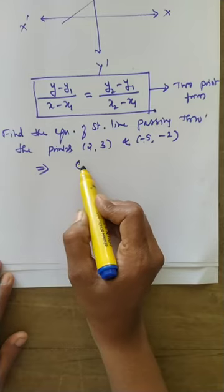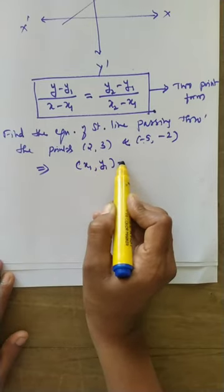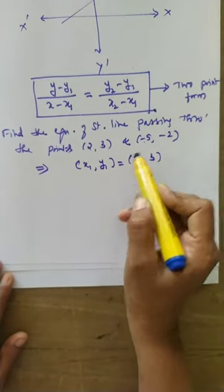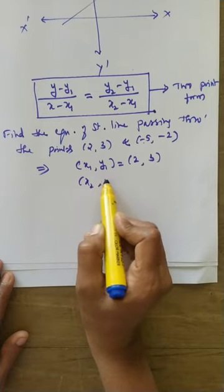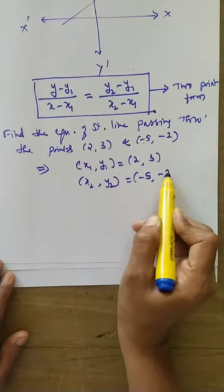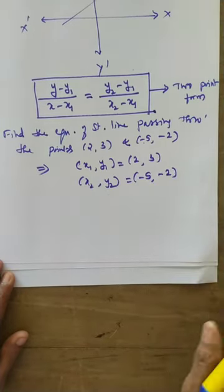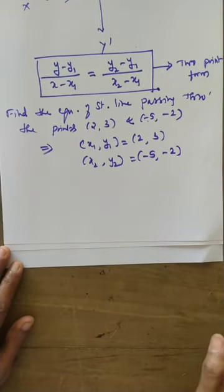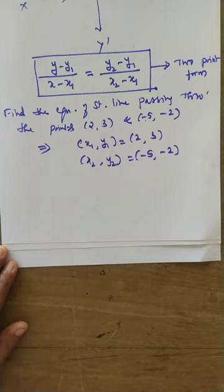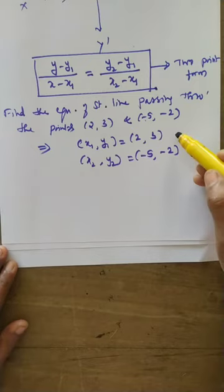So the first point is x1, y1 — that is (2, 3). Second point is x2, y2 — that is (-5, -2). No slope is given, no angle is given, only the line passes through two points. You have to use the two point form.